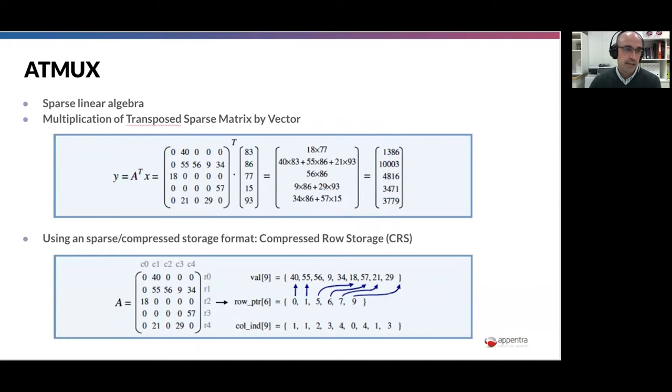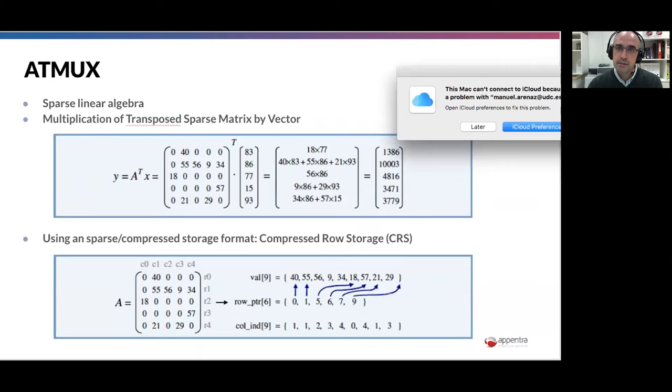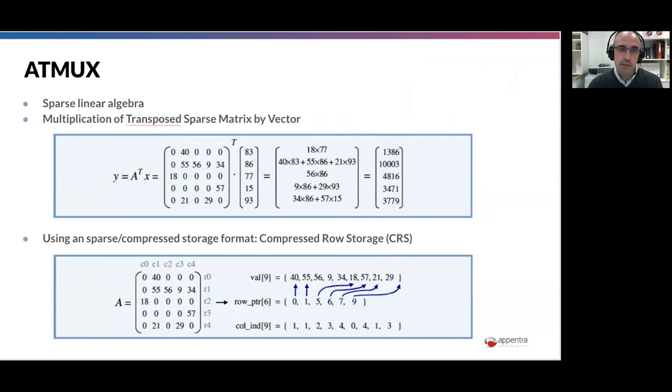You can see here in this slide that this A matrix that has zero and non-zero elements, using the CRS compressed row storage format, you can store only the values that are different from zero. You use auxiliary arrays to store the column indices and the row indices so that you can recover the original position in the dense array.